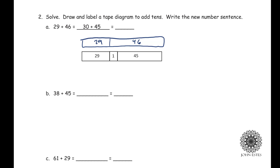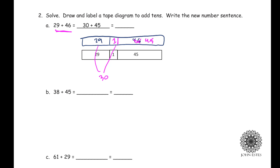Just like subtraction, it's easier to add multiples of 10 than to add 29. So I'm going to take away something from the 46 and relocate one of those objects to go with the 29 — because now that 29 and 1 makes a 30. If I peel off that one, it's like asking one person to leave a classroom and go to a different classroom. Where there were 46, there are now 45. So I have 30 and 45, and instead of 29 plus 46, I now have 30 plus 45, which equals 75.